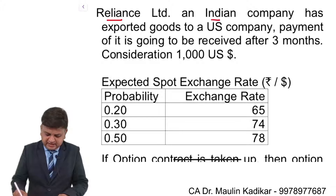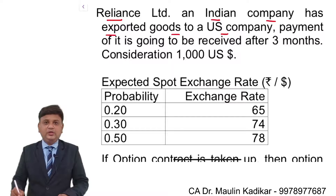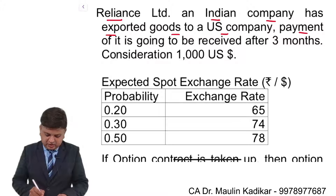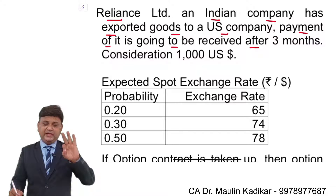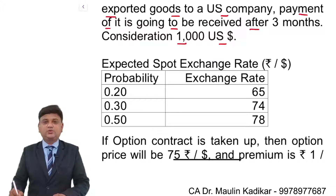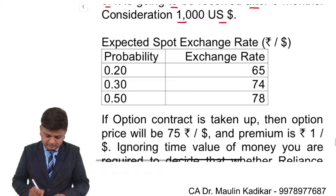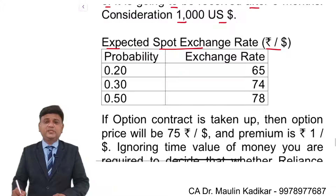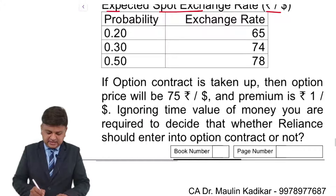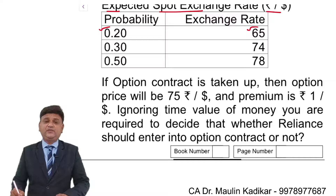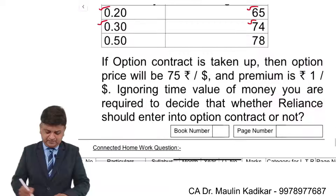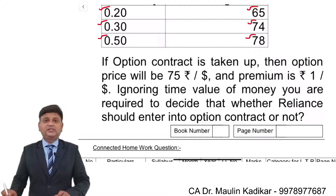Reliance Limited, an Indian company, has exported goods to a US company. Payment is to be received after 3 months, so the credit period is 3 months. The consideration to be received is $1000. The expected spot exchange rates are: 20% chance of 65 rupees per dollar, 30% chance of 74 rupees per dollar, and 50% chance of 78 rupees per dollar.